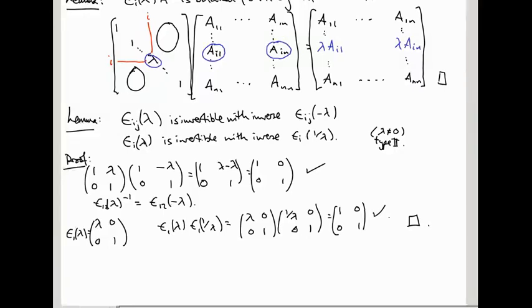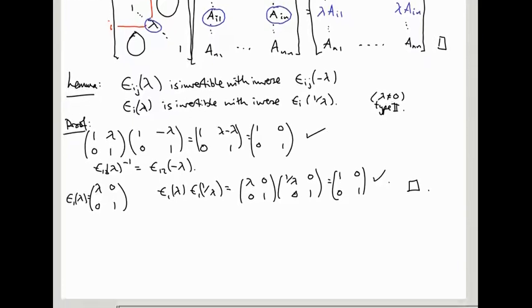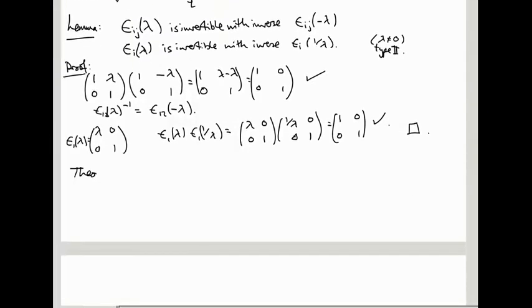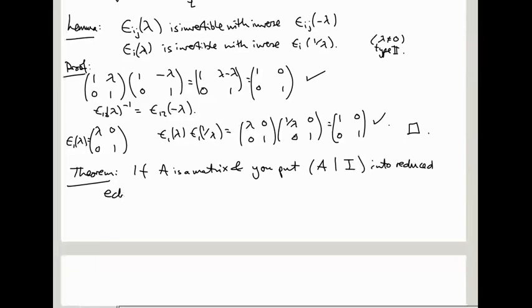So we want to use these ideas with elementary matrices to prove the theorem we said last time, which just to remind you said, if A is a matrix, and you put A bar identity, this augmented matrix with an n by n identity on the right hand side of the bar into reduced echelon form. Meaning that you put everything to the left of the bar into the reduced echelon form, you perform the row operations to both sides, but you stop when the left hand side is in reduced echelon form.